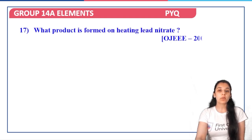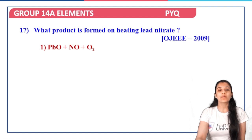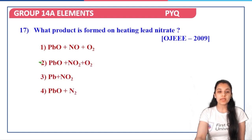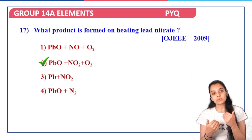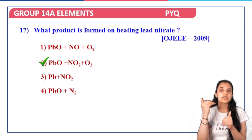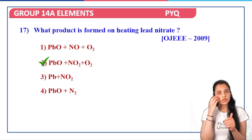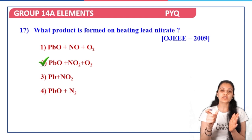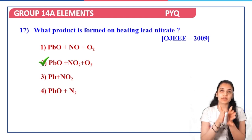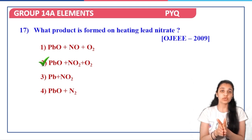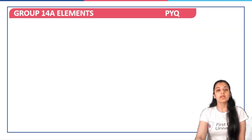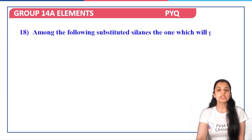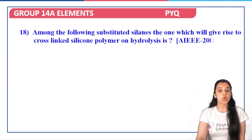Next: what product is formed on heating lead nitrate, Pb(NO3)2? On heating, we get PbO2 + NO2 + O2. We haven't discussed lead extensively, since not many questions are asked on tin and lead. Whatever questions have been asked are taken up in these last two lectures for Group 14. You can make notes from these questions.